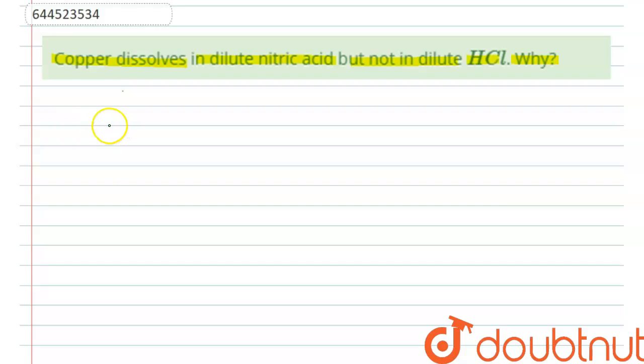In this question, we need to find out why copper is soluble and it dissolves in nitric acid that is HNO3 but not in dilute HCl. The reason is that copper has less oxidation potential or standard oxidation potential than hydrogen.